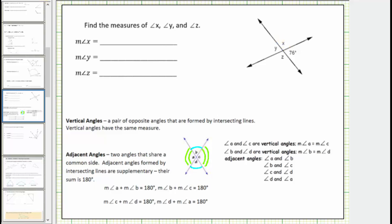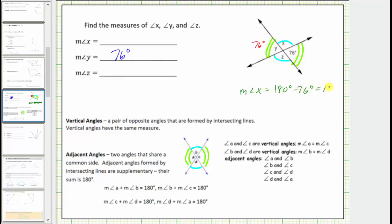Going back to the question, notice angle X and angle Z are vertical angles, as well as angle Y and the given angle that measures 76 degrees. Because vertical angles are equal in measure, the measure of angle Y must be 76 degrees. Notice that angle X and the given angle of 76 degrees are adjacent angles and are also supplementary, which means the measure of angle X plus 76 degrees must equal 180 degrees. Therefore, the measure of angle X must equal 180 degrees minus 76 degrees, which equals 104 degrees.